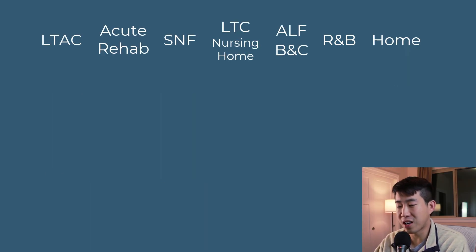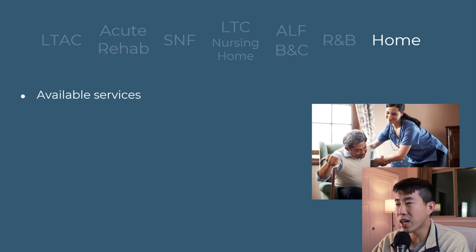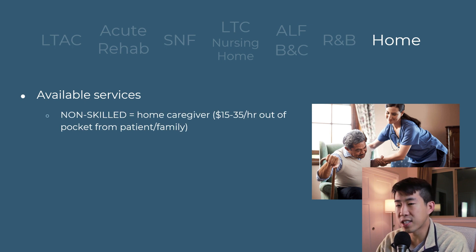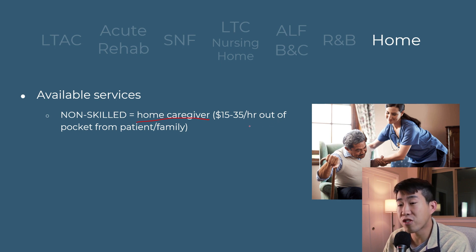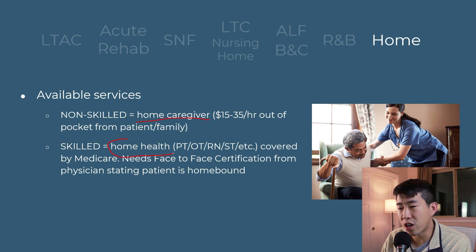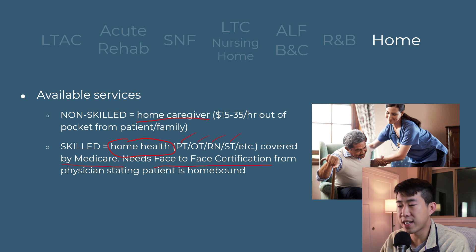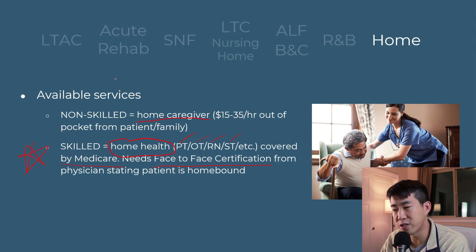Finally, let's talk about the holy grail: sending patients home. For non-skilled care — help with bathing, groceries, cooking, or getting dressed — patients can get a home caregiver, costing $15 to $35 per hour, often out of pocket. For skilled care, the main service is home health, which includes physical therapy, occupational therapy, nursing, and speech therapy, and is covered by Medicare. As physicians, we need to provide a face-to-face certification stating that the patient is homebound in order to get them qualified for Medicare-covered home health. This is a huge reason we're able to send many patients home — home health PT, home health nursing for IV antibiotics, etc.